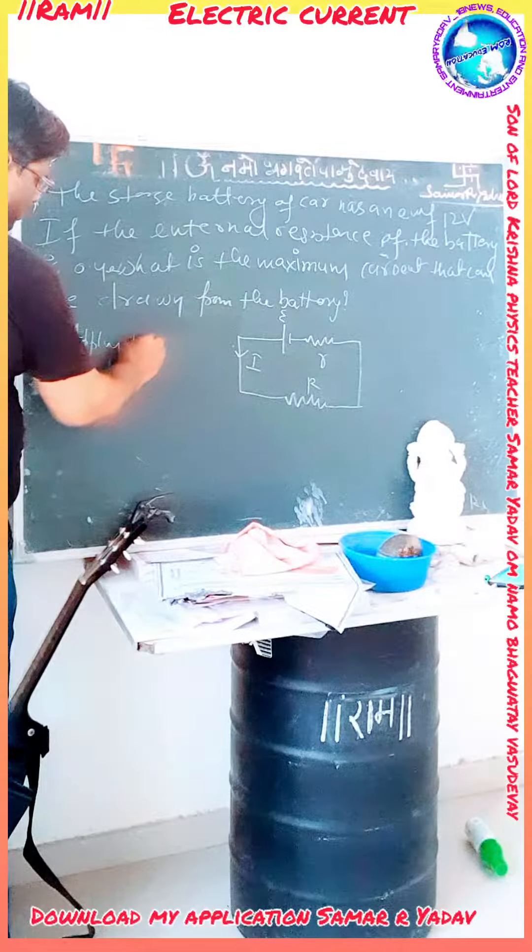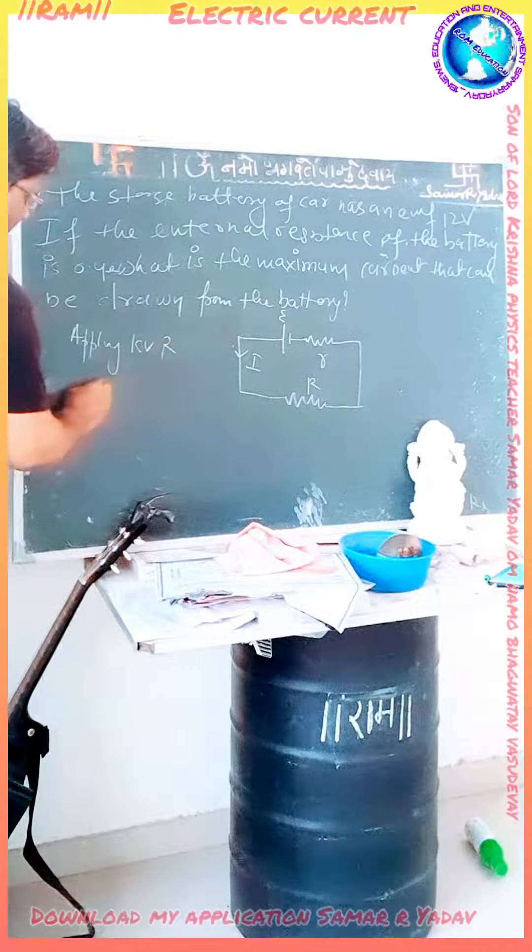Now applying Kirchhoff's voltage rule, that is: minus I·R minus I·r is equal to minus E. Therefore, I times (R plus small r) is equal to E. Therefore, I is equal to E upon (capital R plus small r).